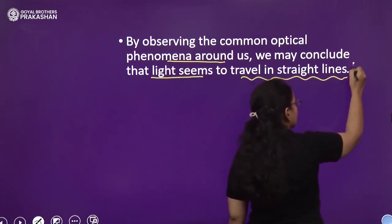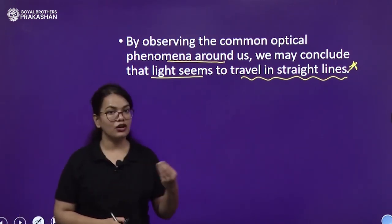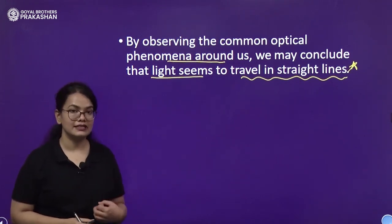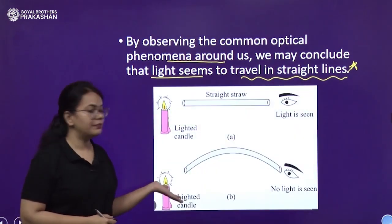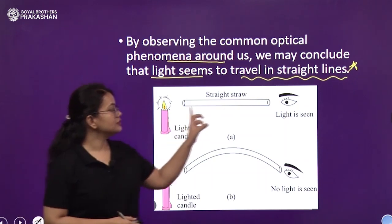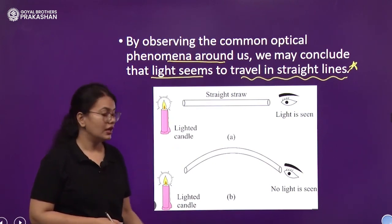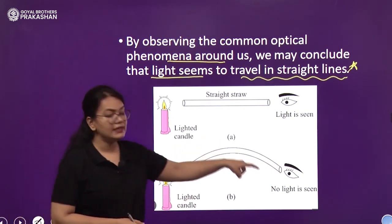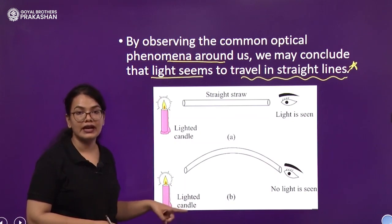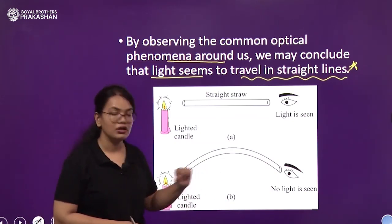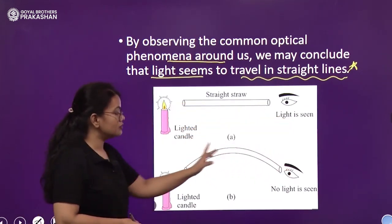By observing common optical phenomena around us, we may conclude that light seems to travel in a straight line. One proof of this is a simple experiment: take a lighted candle and view the flame through a straight straw. Now simply bend the straw and try to view the flame — you won't be able to see it through the bent straw. Therefore light only travels in a straight path; in the bent form the light does not travel through.